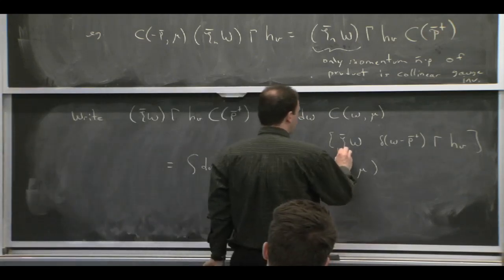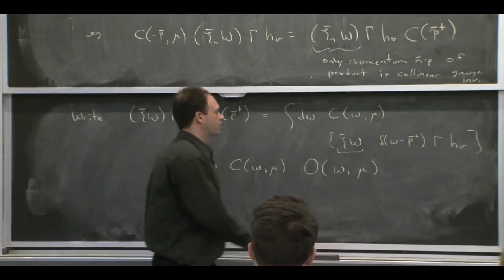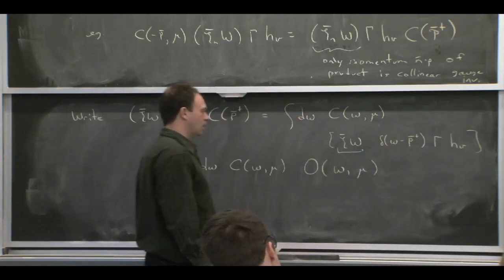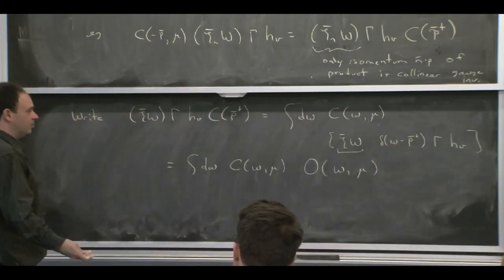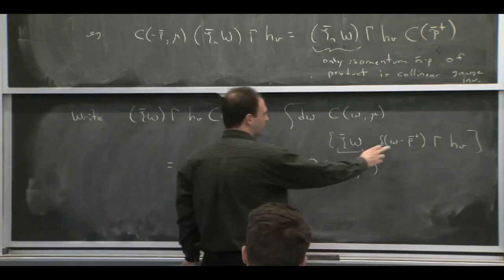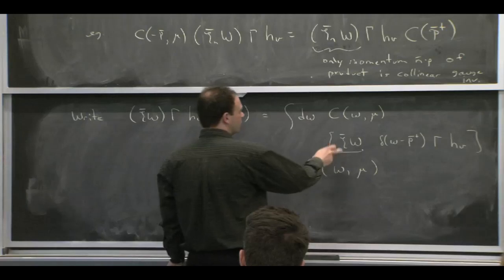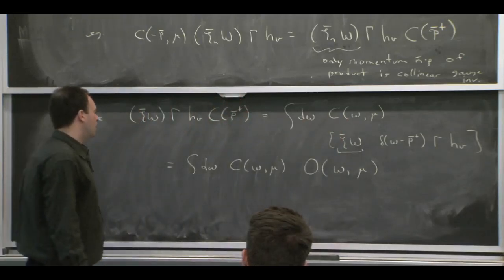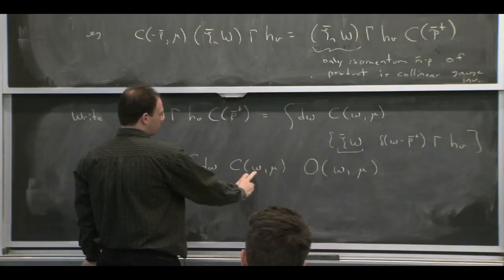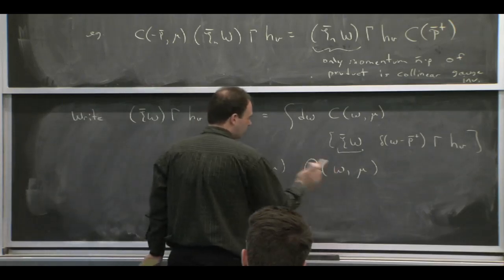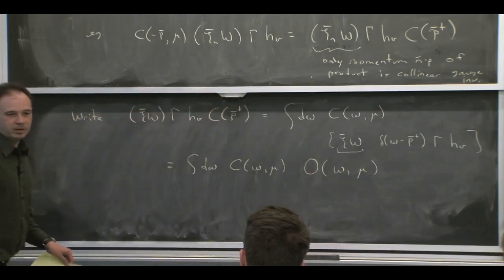So in general, products of fields like this, we have to think about their momenta as being something that we could label, if you like. We label it by omega. Because it's a collinear gauge invariant concept, the Wilson coefficients can depend on those momenta. And then we have Wilson coefficients that depend on those momenta and operators that are just labeled by those momenta.